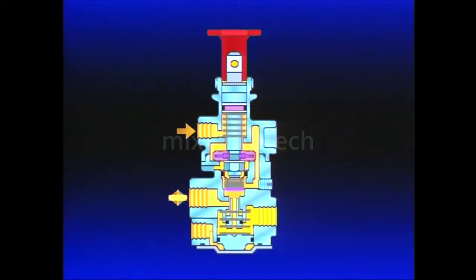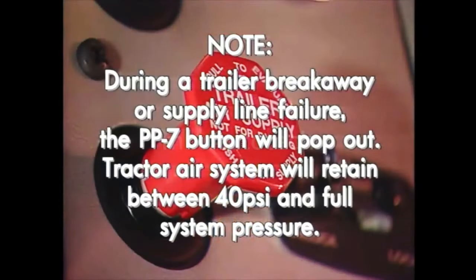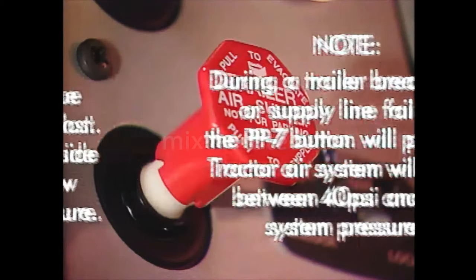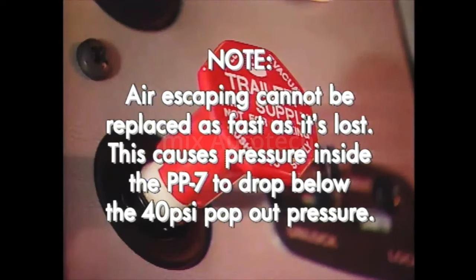During a trailer breakaway or a sudden complete trailer supply line failure, the PP7 button will pop out automatically. The tractor air system will retain between 40 PSI and full system pressure depending upon the location and severity of the failure. Air escaping from the failed supply line cannot be replaced through the PP7 supply port as fast as it's lost. This causes pressure inside the PP7 to drop below the 40 PSI pop out pressure even though supply port pressure is much higher.